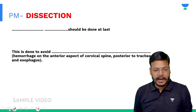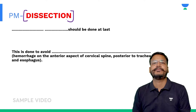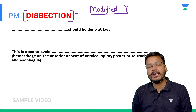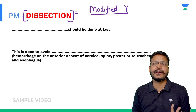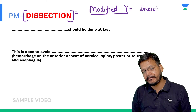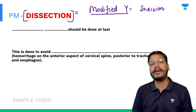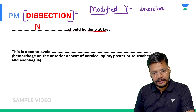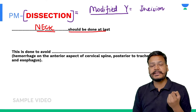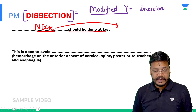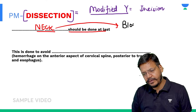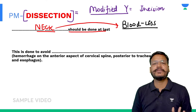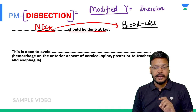Regarding dissection during asphyxial death — for hanging and strangulation, we use the modified Y dissection, which starts from the mastoid process. The last cavity to be opened is the neck. Neck dissection should be done last. We start with the cranium, and neck dissection is performed last because we want the neck as a bloodless field.